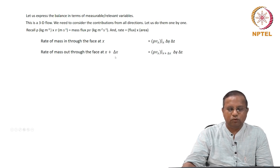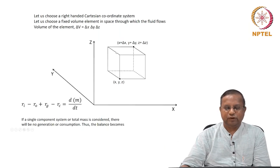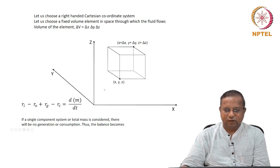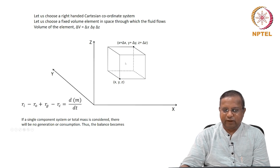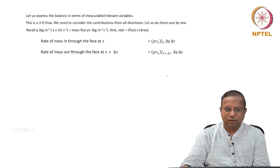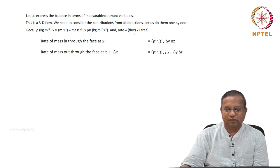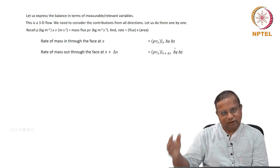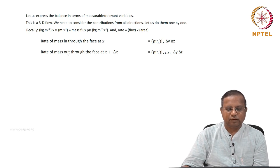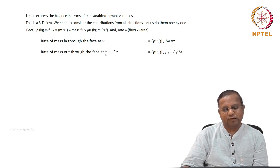The rate of mass out through the face at x plus delta x: this is the face at x plus delta x. We are looking at something entering at x and leaving through x plus delta x. Therefore, the rate of mass out through the face at x plus delta x is rho times vx (at x plus delta x) times delta y times delta z — that area does not change.